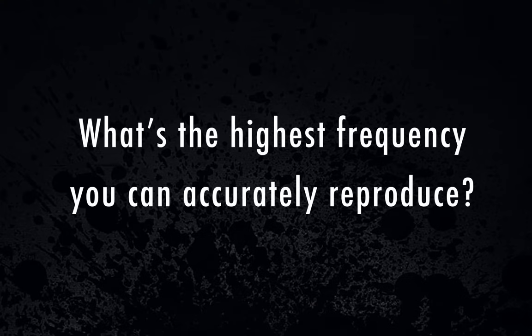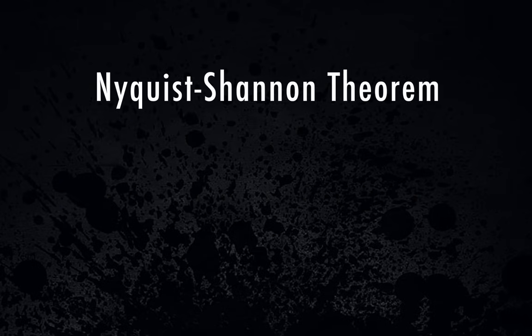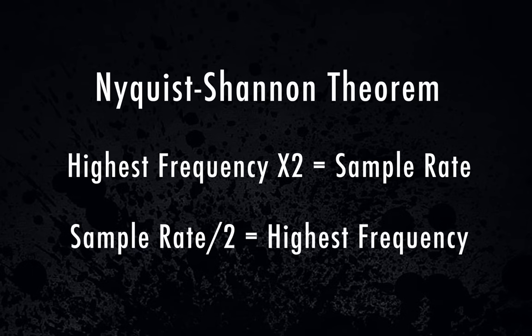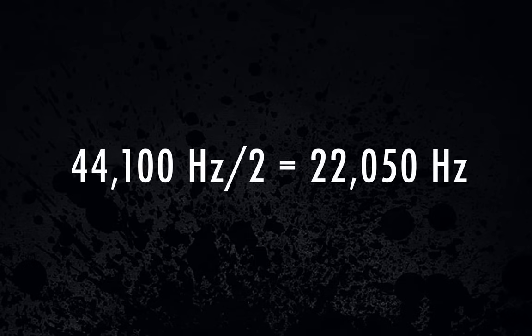Based on what sample rate you choose, it's pretty easy to figure out the highest frequency your sample rate can support. The Nyquist-Shannon theorem states that your sample rate has to be two times the highest frequency you're trying to capture. The way I like to describe it: just take your sample rate, divide it in half, and that gives you the highest frequency your recording can accurately reproduce. For instance, if we're using a sample rate of 44,100, divide that in half and you get 22,050 Hz — so the highest frequency you can accurately reproduce is 22,050 Hz.